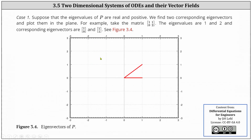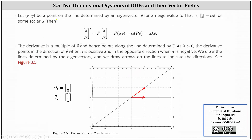For case one, suppose the eigenvalues of P are real and positive. We find two corresponding eigenvectors and plot them in the plane. For example, if we have the two by two matrix with entries 1, 1, 0, 2, the eigenvalues are one and two, and the corresponding eigenvectors are the vectors (1, 0) and (1, 1). We have the two eigenvectors plotted below on the coordinate plane. Let X, Y be a point on the line determined by the eigenvector V for the eigenvalue lambda. That is, the vector XY equals alpha times the eigenvector V for some scalar alpha. Then the derivative of the vector XY equals alpha times lambda times the eigenvector V.